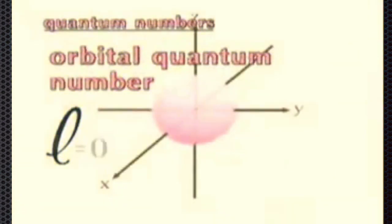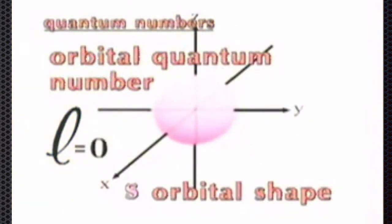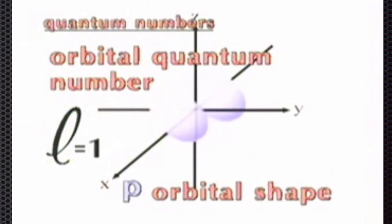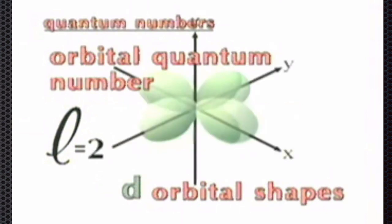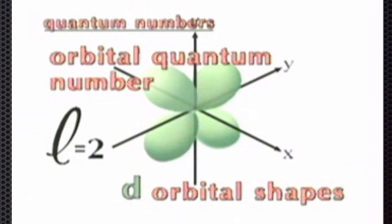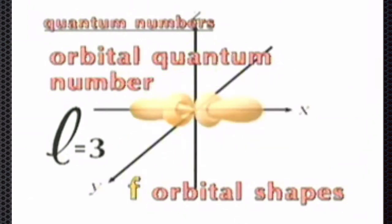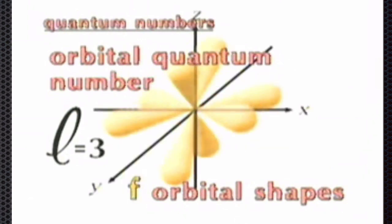The second quantum number L refers to the shape of the orbital. There are four important shapes, each with a slightly different energy. All S-shaped orbitals are spherical. P orbitals are dumbbell shaped. And the D and F orbitals are more complicated, as shown in these drawings.